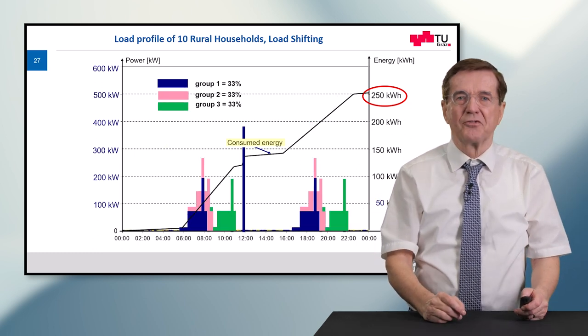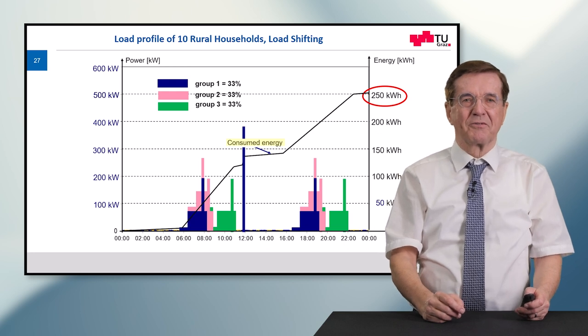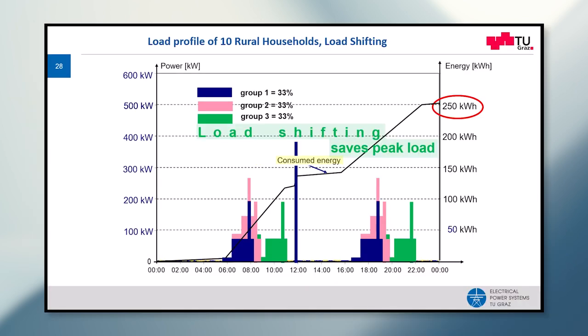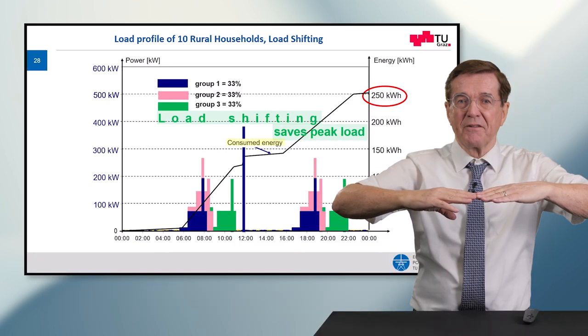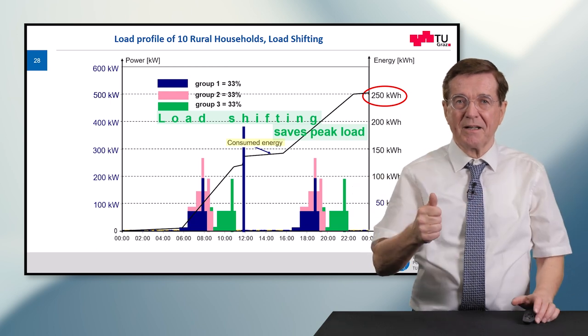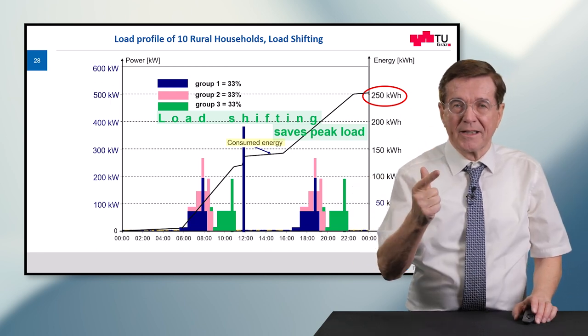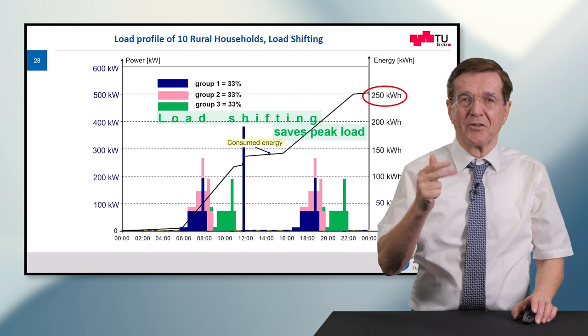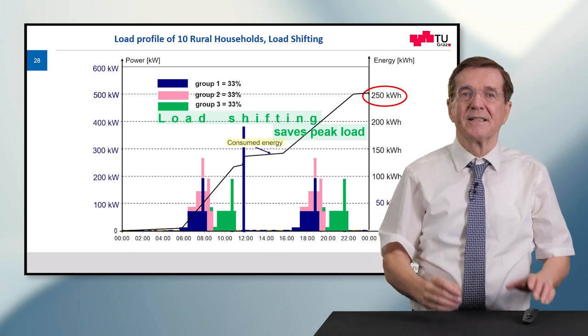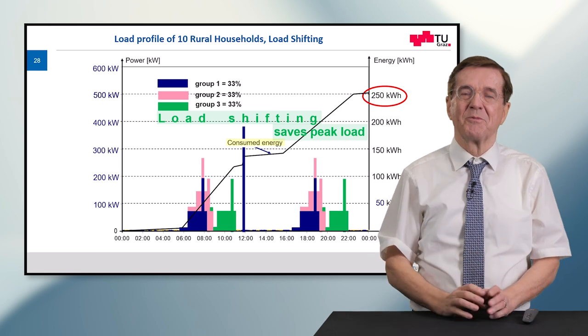This can be extended even to three groups, and you can see what we achieve: the three groups through load shifting save the peak load. We can get more energy through the same type of cable with less peak load. This is the benefit of load shifting — saving peak load and getting more energy through an already installed line — but it requires some adjustment of consumer behavior.